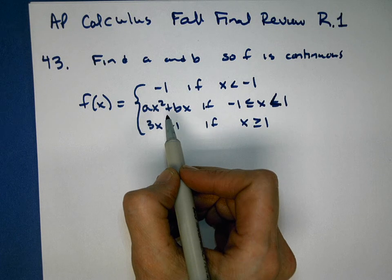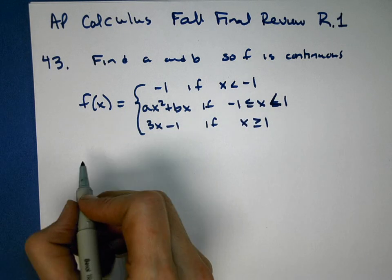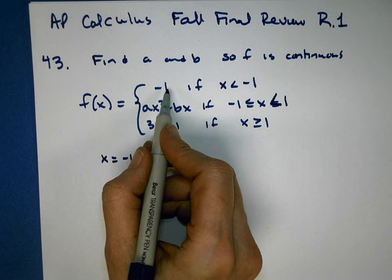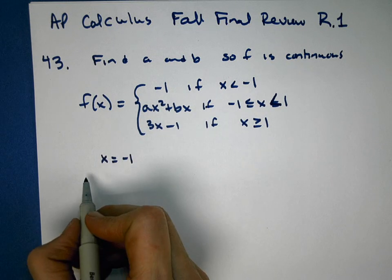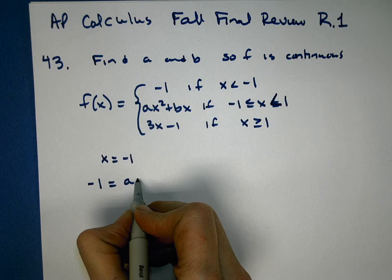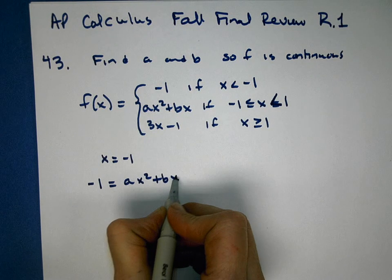Now you need to look at what X they meet at, and they meet at negative 1. So when X is equal to negative 1, we want the first function to equal the second function. So that means we want negative 1 to equal AX squared plus BX.